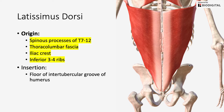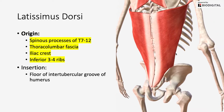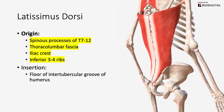Your thoracolumbar fascia then blends into your iliac crest, and the latissimus dorsi will attach to your iliac crest. It also has attachment sites on the inferior three to four ribs, as you can see down here.